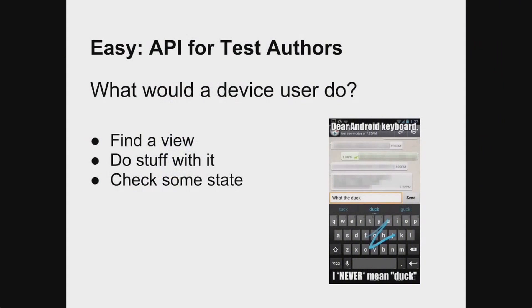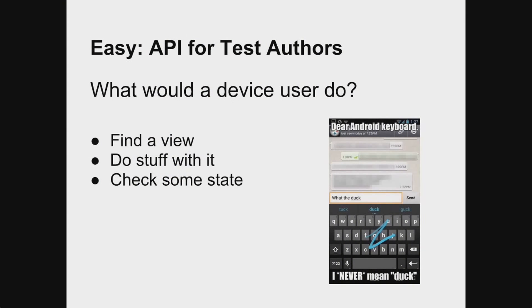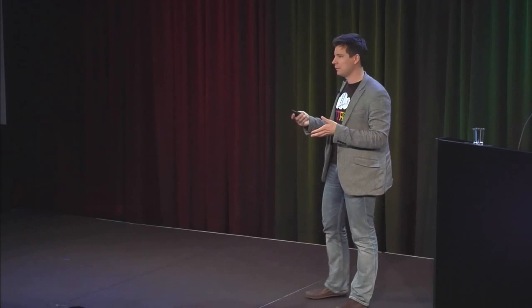The next part is the API, which really needs to feel intuitive and familiar to developers — we don't want a large learning curve. Since we were starting from scratch, we just thought: what does the tester, the developer writing the test, want to do? They want to do what the user does. We're talking about user interface. The user really just wants to do three things: find an element, do stuff with it like click and type, and then check some state.